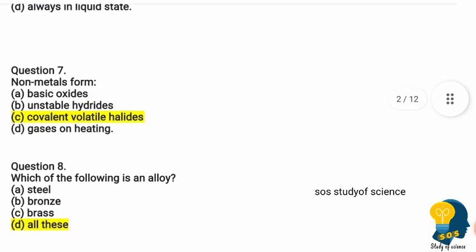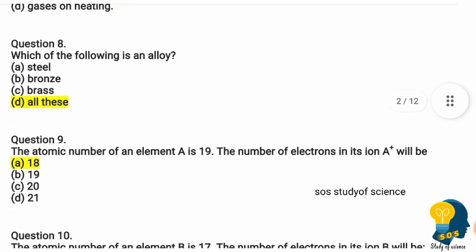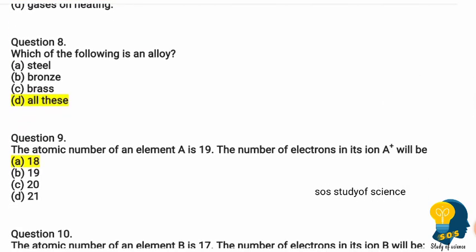Question seven: non-metals form — option A basic oxides, option B unstable hydrides, option C covalent volatile halides, option D gases on heating. The correct answer is option C, covalent volatile halides.